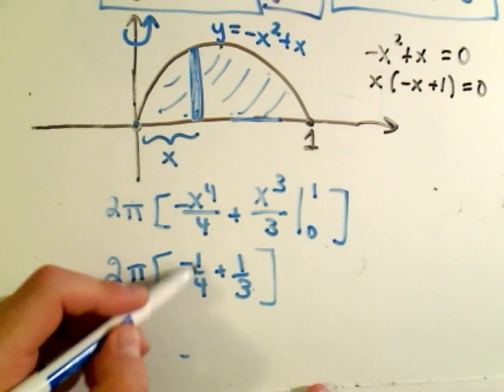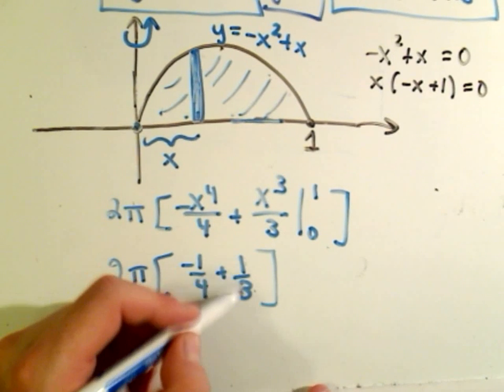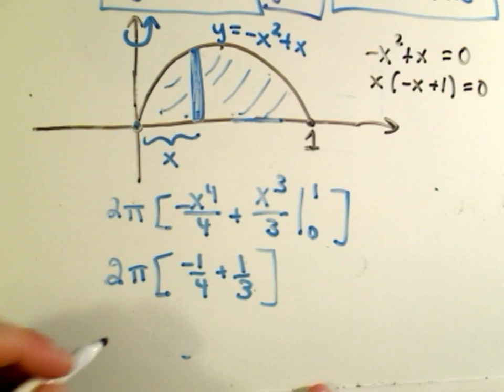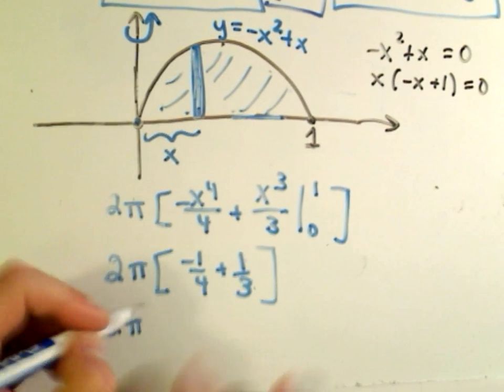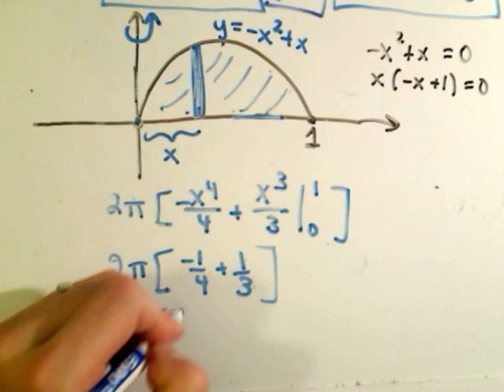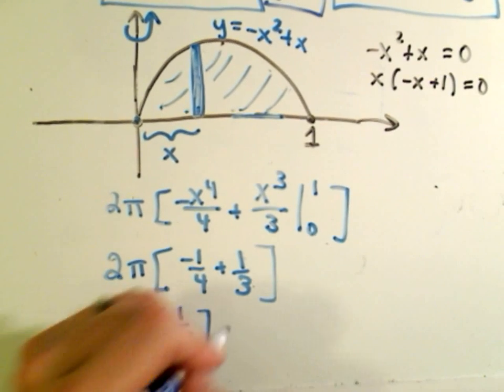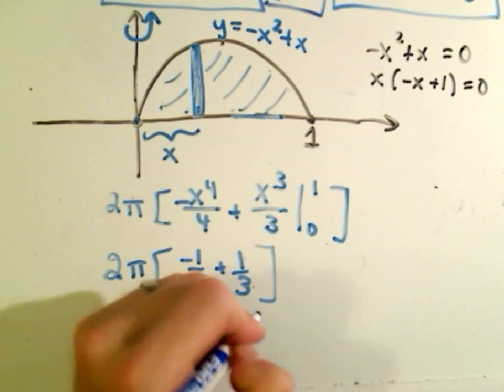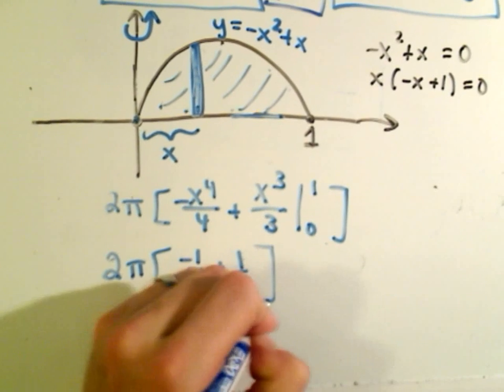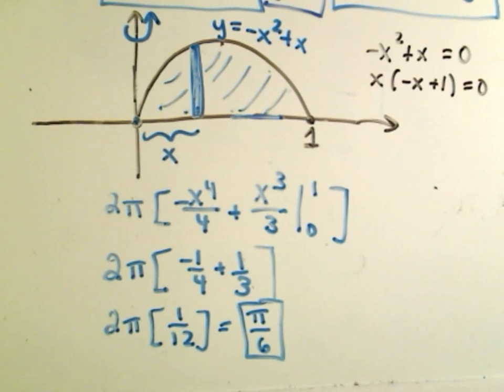If we get common denominators, multiply top and bottom by 3 to get negative 3 12ths, multiply top and bottom by 4 to get 4 12ths. We would have negative 3 plus positive 4, or 1 12ths. So if we distribute that out to 2 over 12, we'll simply leave us with pi over 6 as our volume in this case.